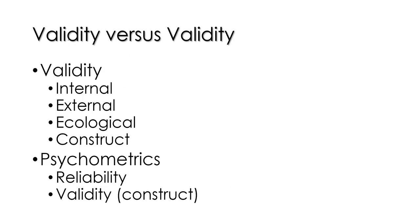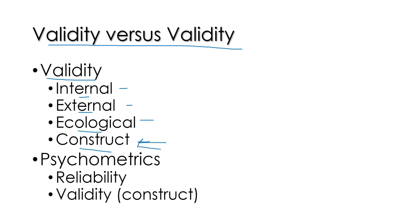Other question: validity versus validity — this is indeed confusing. In psychology, we use the term validity to refer to how valid an experiment is, and there are several different types: internal validity, external validity, ecological validity, and construct validity. In construct validity, we're talking mainly about how well the operational definition measures the construct. In psychometrics or measurement theory, validity and construct validity refer to the same thing.